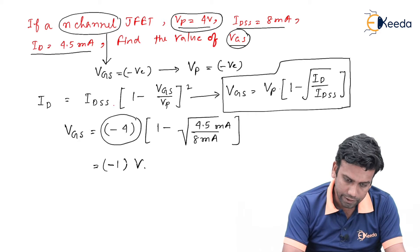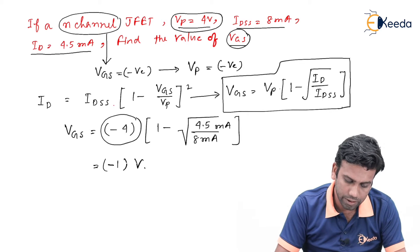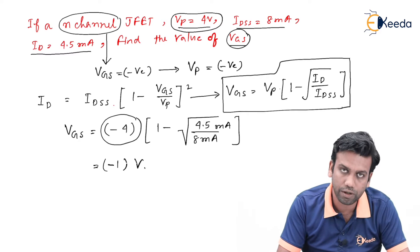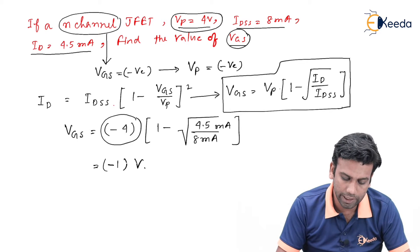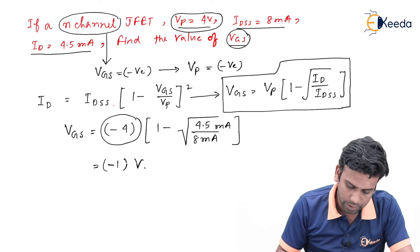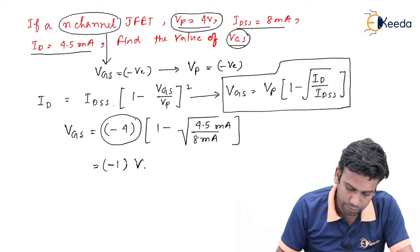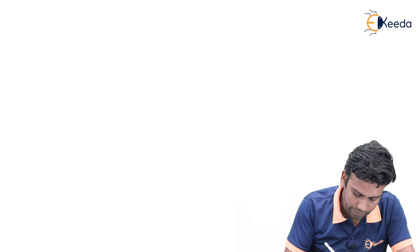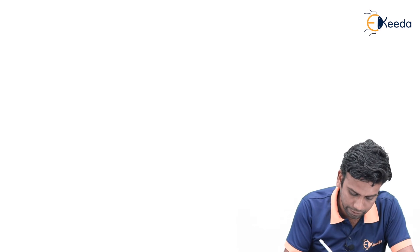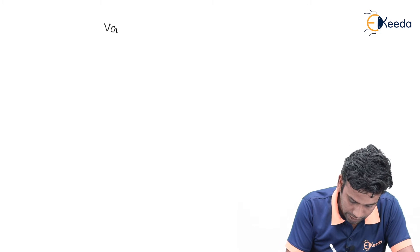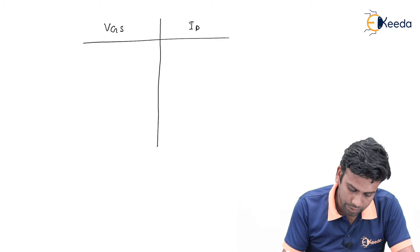For this case, let us define a chart and try to remember this chart because it will be helpful in the gate examination. The chart looks like this. We want to find the value of different Vgs and ID.